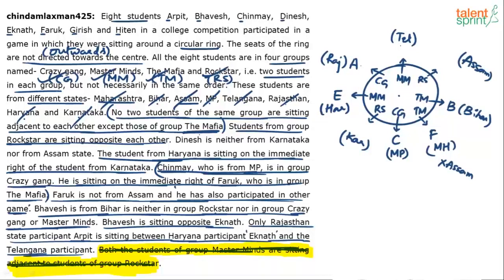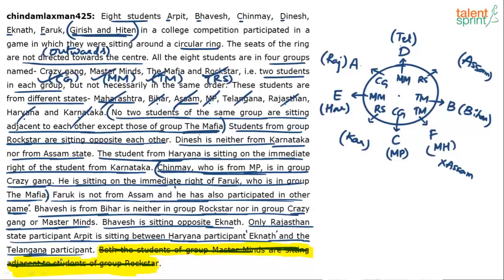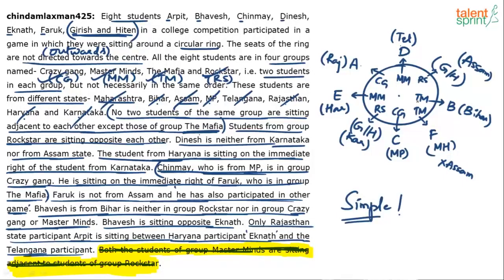Only persons remain. Dinesh is neither from Karnataka nor from Assam, so Dinesh must be from Telangana. We have A, B, C, D, E, and F placed. Girish and Hiten are the remaining two, and they will be in the Karnataka and Assam seats — but which exactly is which state for Girish and which for Hiten is not determined. So Girish and Hiten are in those two positions. It looked complex, but with a single logical chain we got the full arrangement quickly.